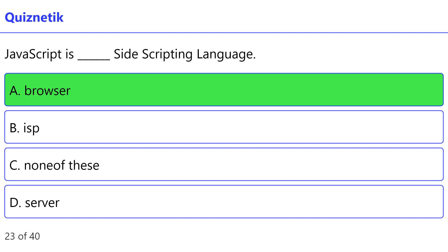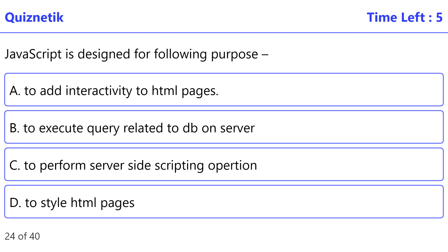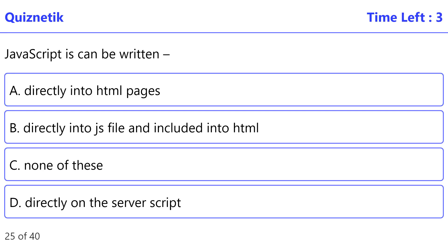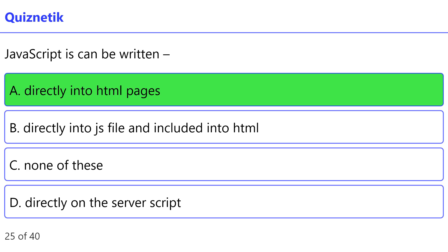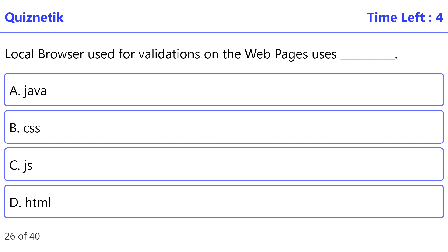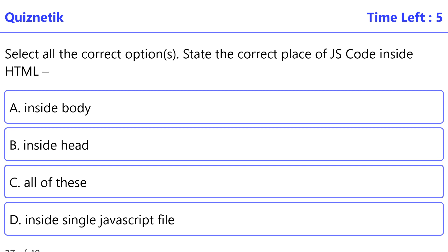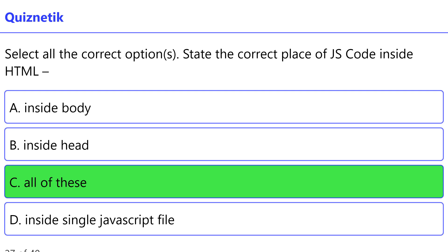Use the client-side JavaScript object: correct option is D: fileUpload. JavaScript is a client-side scripting language: correct option is A: browser. JavaScript is designed for the following purpose: correct option is A: add interactivity to HTML pages. JavaScript can be written: correct option is A: directly into HTML pages. Local browser used for validations on web pages uses: correct option is C: .js. State the correct place of JS code inside HTML: correct option is C: all of these.